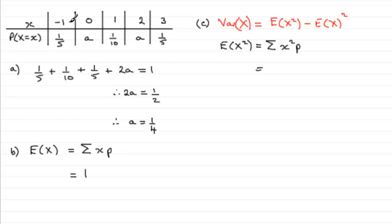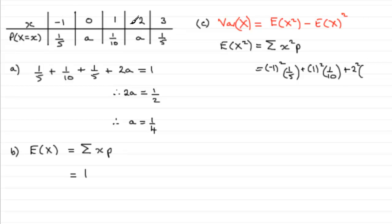You should know that E(X²) is equal to the sum of your observed values squared multiplied by the corresponding probability. So we work out minus 1 squared times 1/5, then 0 squared times A (which is clearly 0), then 1 squared times 1/10, plus 2 squared times A — where A was a quarter — and finally 3 squared times 1/5. Working that out, you'll find you get 31 over 10.